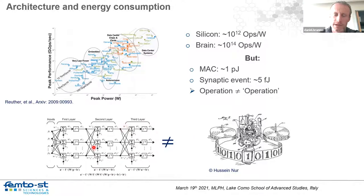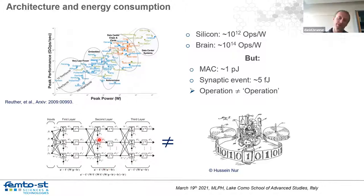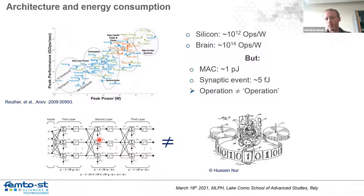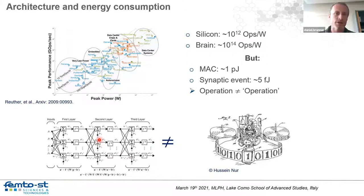I pointed out yesterday that a neural network per se is a biology-inspired concept coming from biological neural networks, and it is almost orthogonal to the principle of computing we used as an optimization target for all of our silicon electronic hardware substrates.